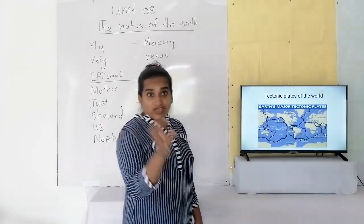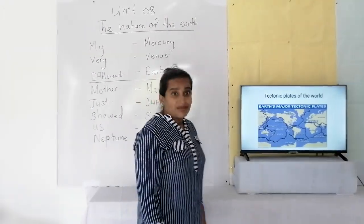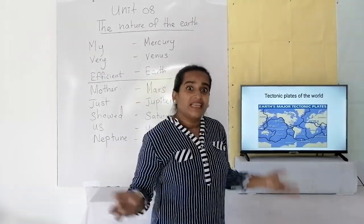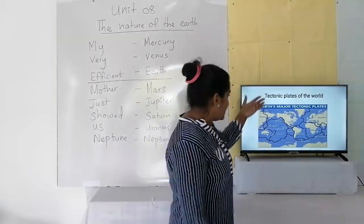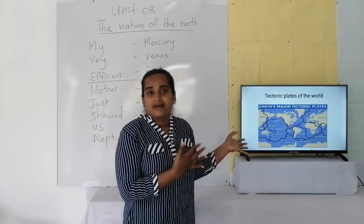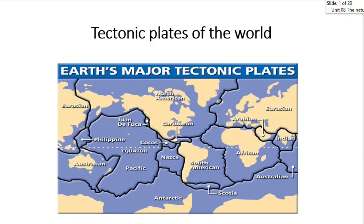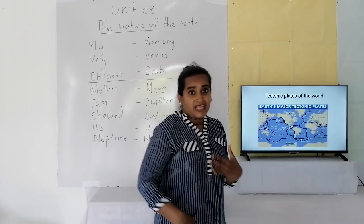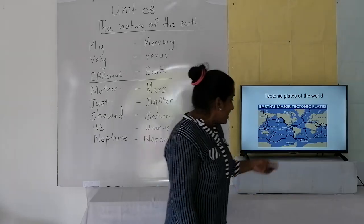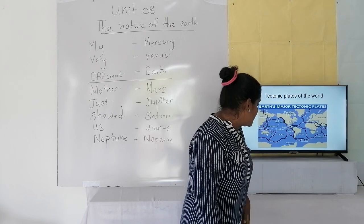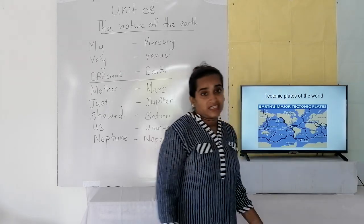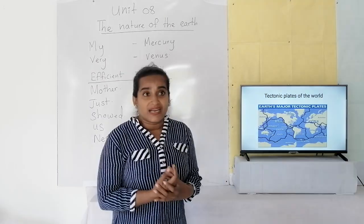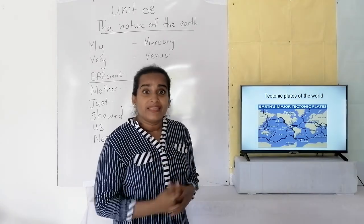Now I want to give some examples of tectonic plates. From this map, there are some tectonic plates given. For example, the Eurasian tectonic plate, North American tectonic plate, South American tectonic plate, and Pacific tectonic plate. There are some examples and you can go through them.